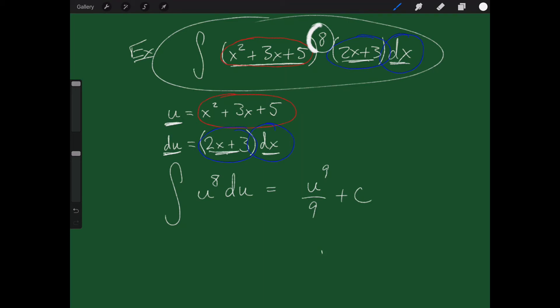Now, that is technically the answer if you want the answer to be in terms of u. I don't. I want the answer to be in terms of x because that's where I started. But that's easy to do because what is u? u is x² + 3x + 5.